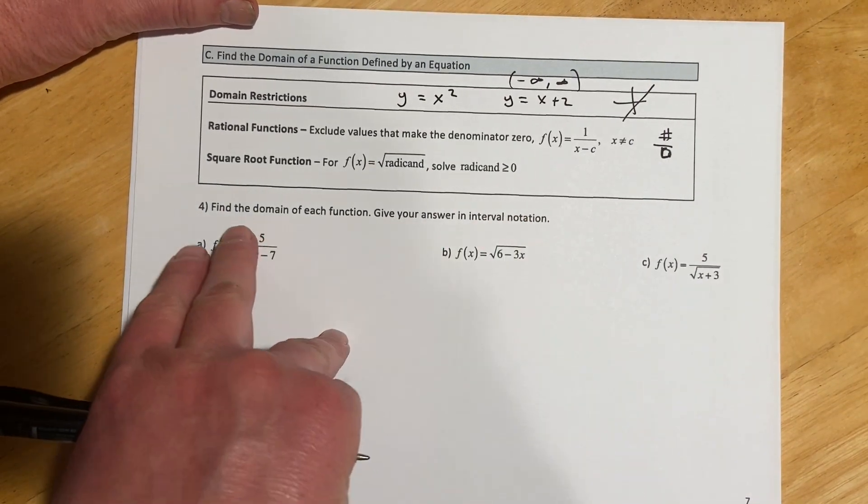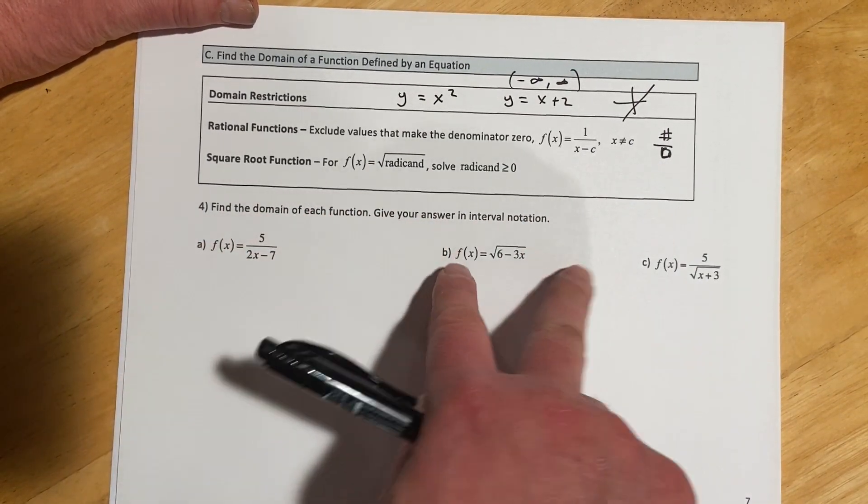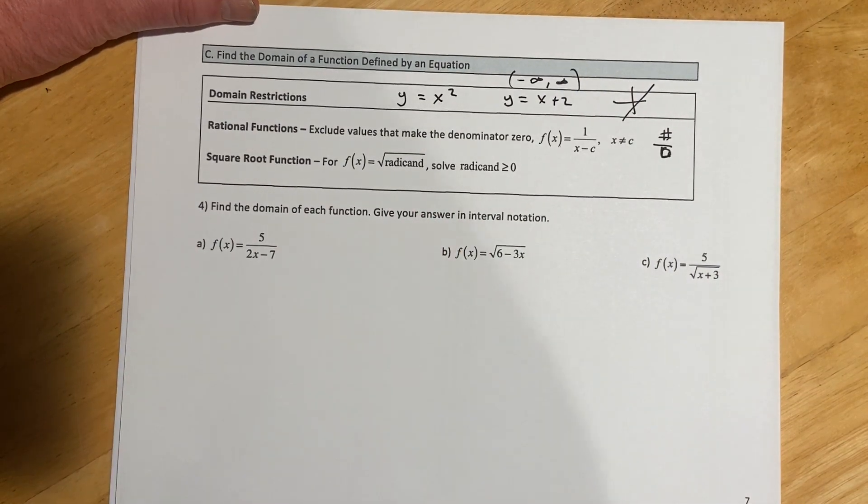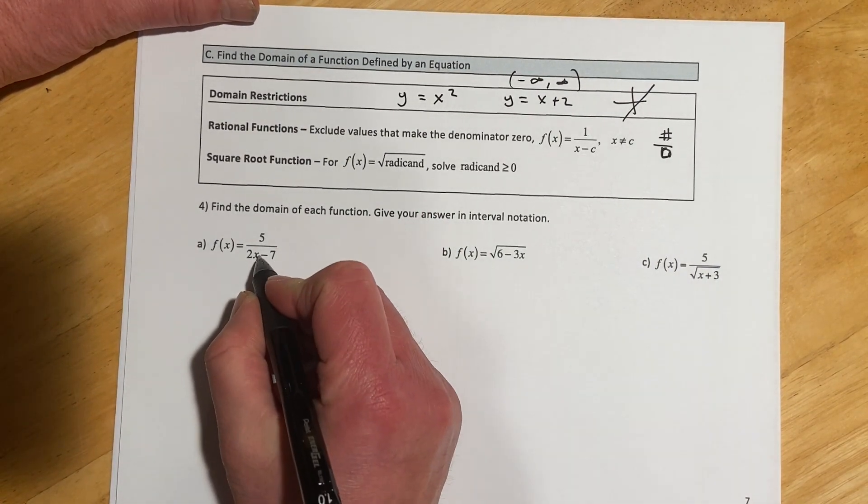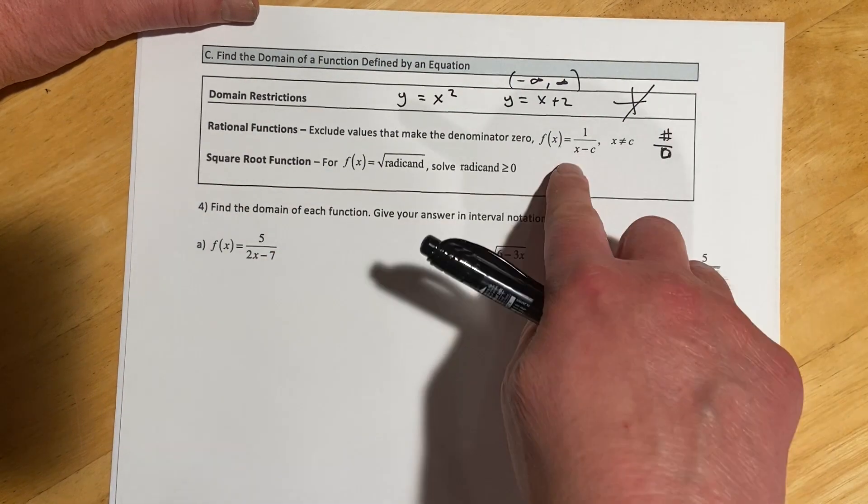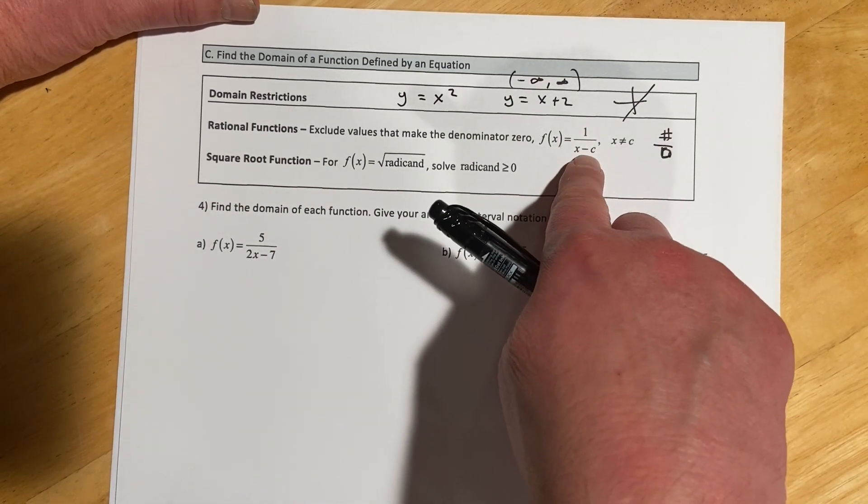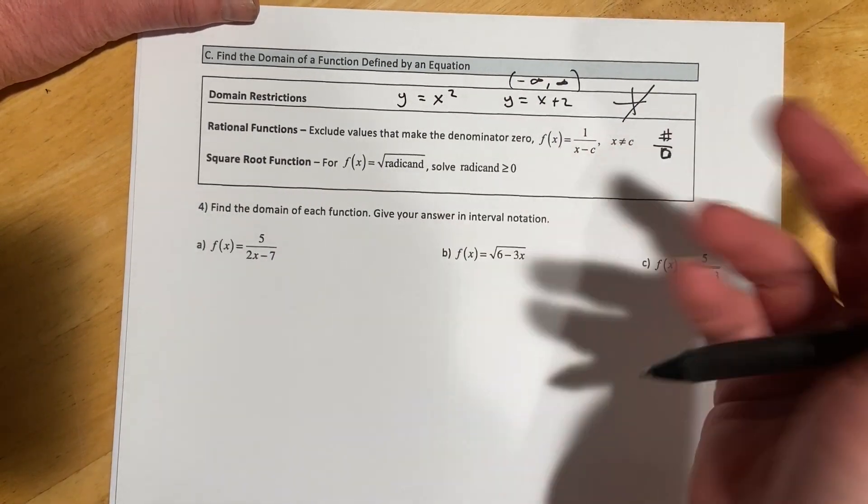Okay, so for the examples, we're going to find the domain of each of these functions, and then we're going to give our answer in interval notation. So here, we have a rational. So what that means is that the denominator doesn't get to equal zero, essentially. We can't let x equal something that makes the denominator zero.